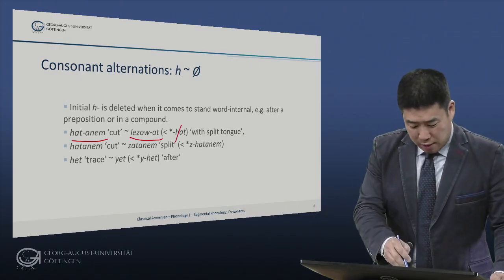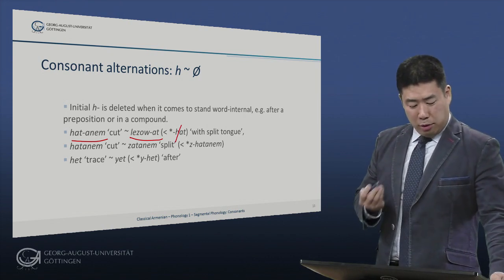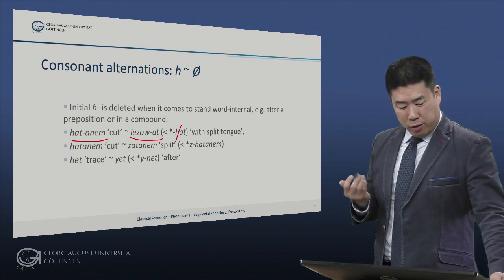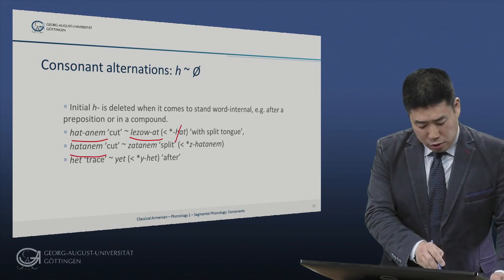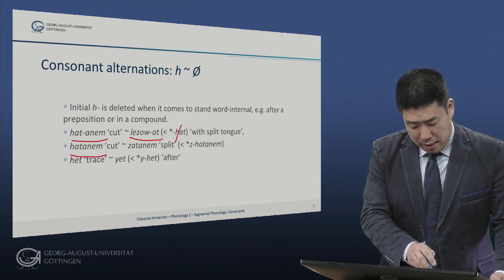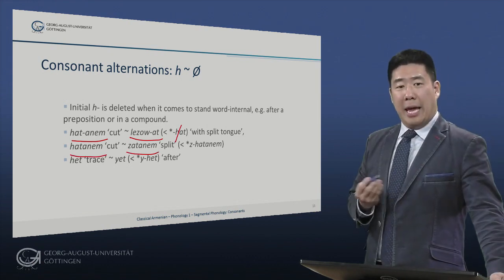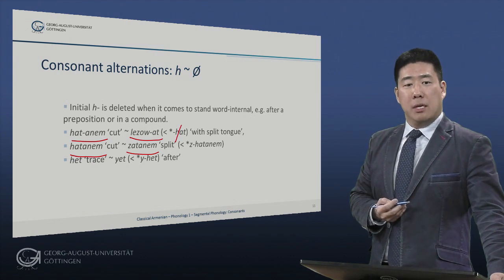We see loss of the H. We also see that after the pre-verb 'zeh', 'hotanem' alternates with 'zatanem', where the H is lost after the Z.